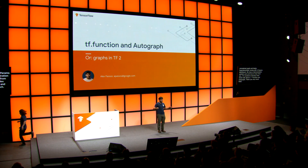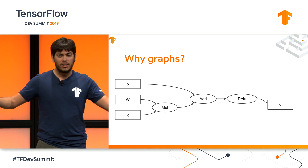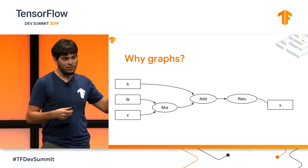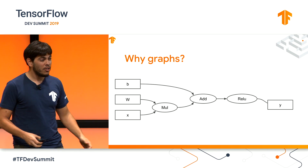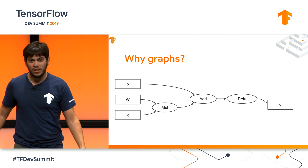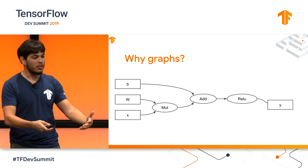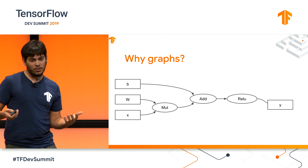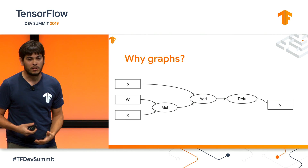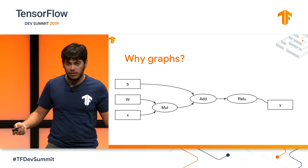I'm Alex, and I'm here to tell you about how you're going to build graphs in TensorFlow 2.0. This might make you a little uncomfortable, because we already spent quite some time earlier today telling you that in TensorFlow 2.0, we use eager execution by default. So why am I taking that away from you? I'm not — you still have eager execution by default, but graphs are useful for quite a few things.